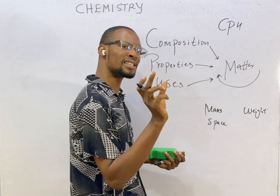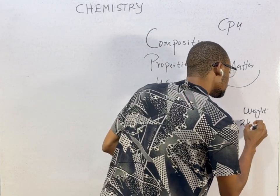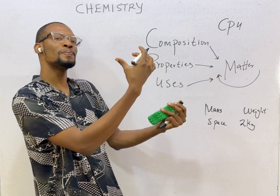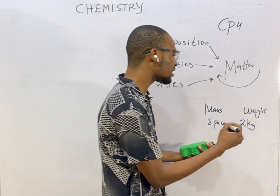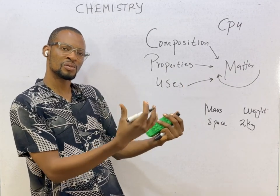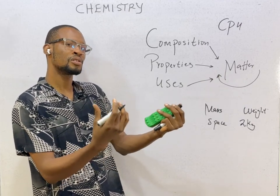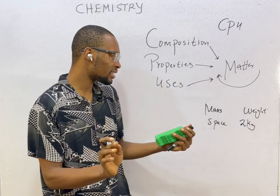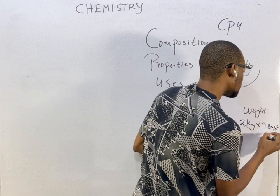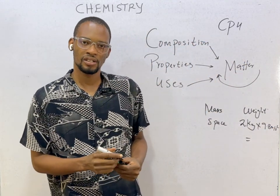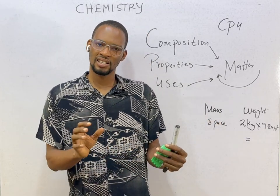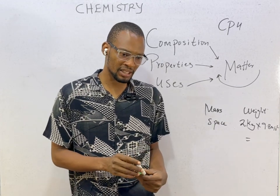The unit of mass is kilograms (kg). If you have a mass of 2 kg and raise it up, it gets multiplied by the force of gravity. The acceleration due to gravity on earth is approximately 9.8 m/s² (or 10 m/s²), which is different on the moon and other planets. When you multiply mass by gravity, you get weight. That is the difference between weight and mass.